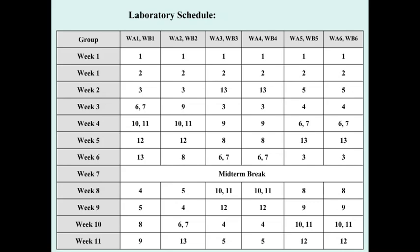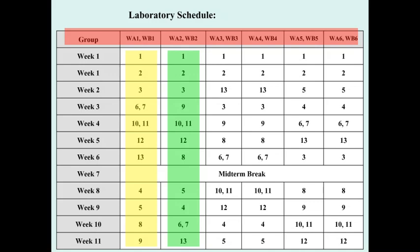Coming to the lab schedule: the international class doesn't have many groups. Since there are about 10 of you, you can be separated into two groups — group one and group two. If you are in group one, you follow the yellow band schedule; if you are in group two, you follow the green band.